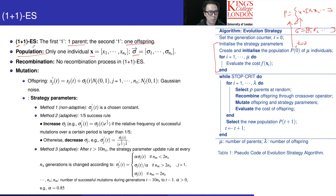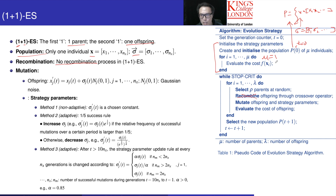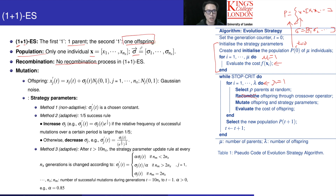When we talk about 1 plus 1 ES, we do not have recombination — no recombination process, meaning we do not perform crossover. In this loop, because mu equals 1, we only evaluate the single x in this population. For lambda equals 1, we are going to generate one offspring. So the first number represents mu and the second number represents lambda.